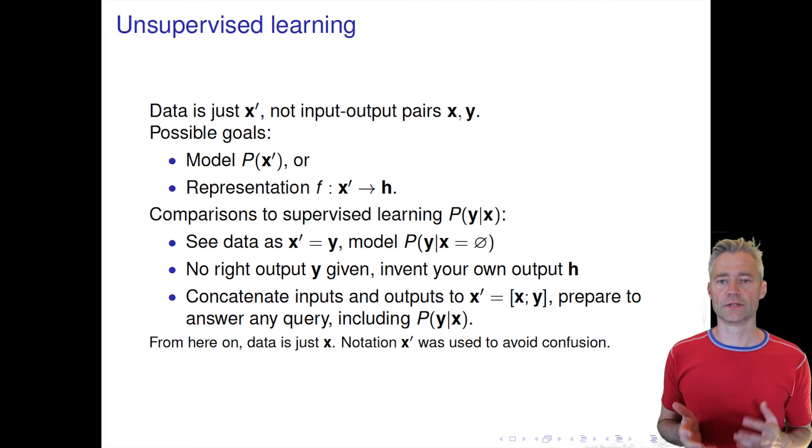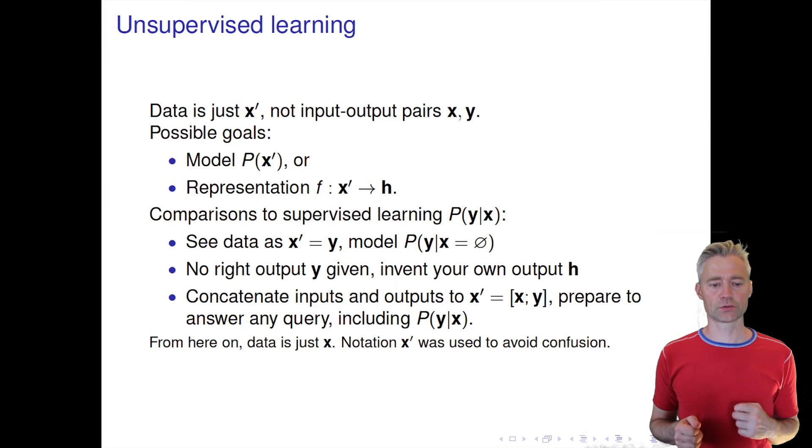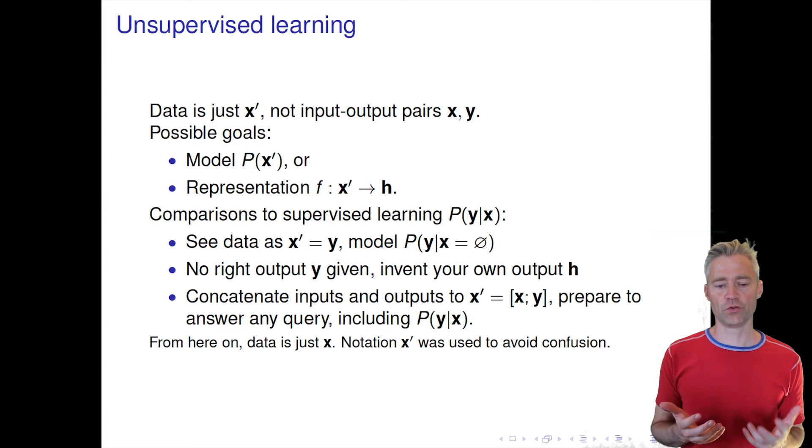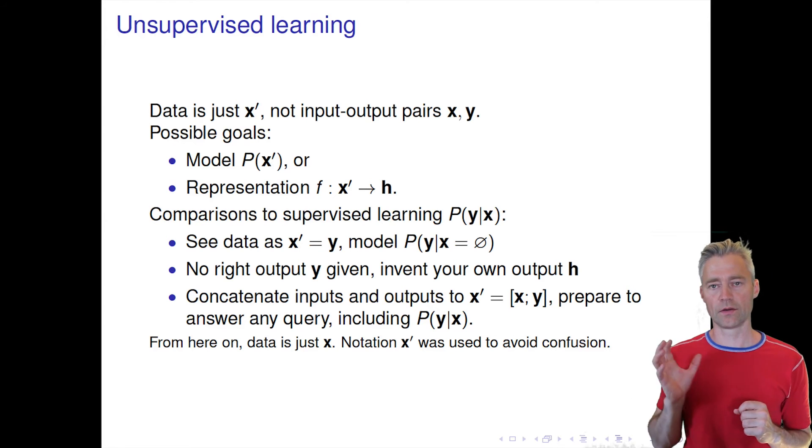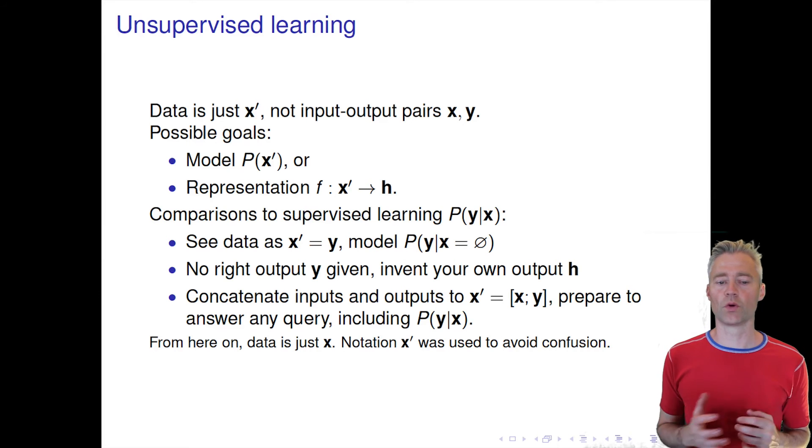So let's try to formalize a little bit what unsupervised learning is about. Now we have been used to having these labeled pairs, so we have an input feature X and a label for this specific X. Now we are in a situation where we don't have Y, so we only have X.